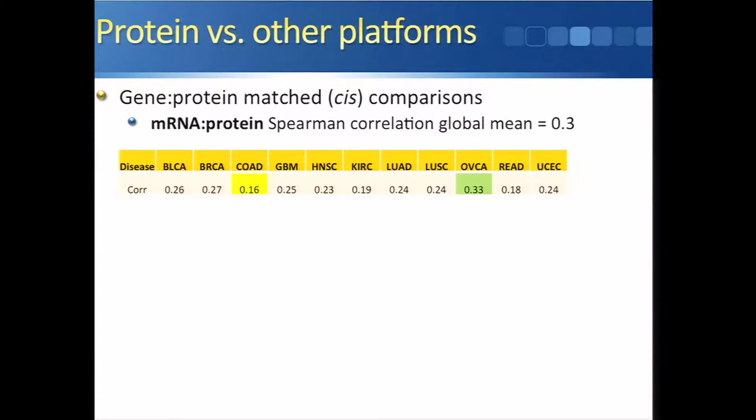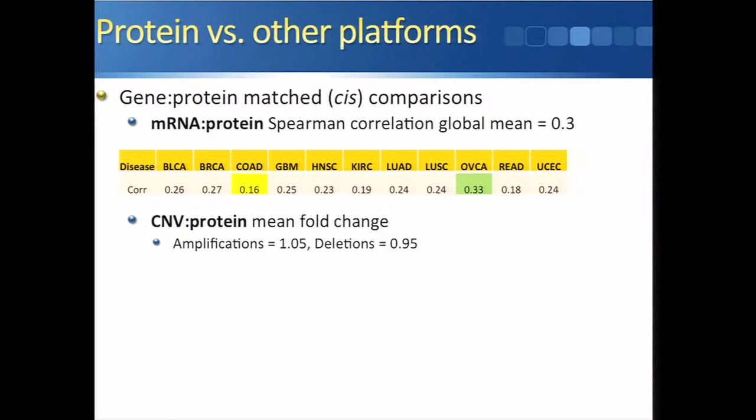When we looked at individual mean correlations within the 11 disease types, we found the correlation was not uniform across diseases. In colon cancer, the average correlation between mRNA and protein was on the order of 0.16. However, in ovarian cancer, the correlation was much higher at 0.33. So we didn't see a uniform distribution of correlations across disease types.